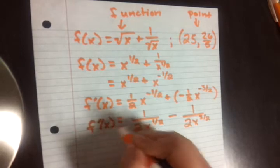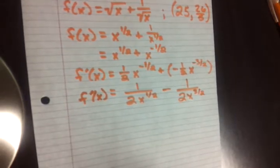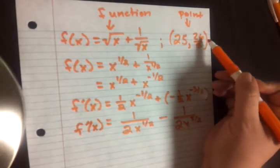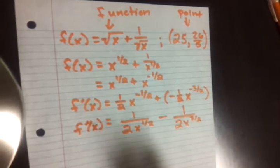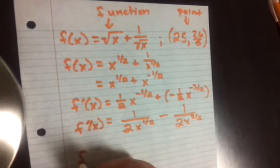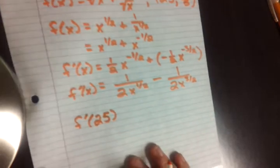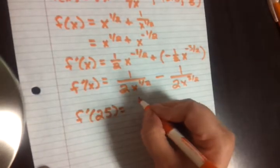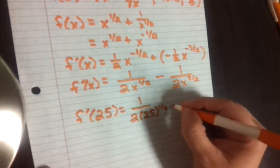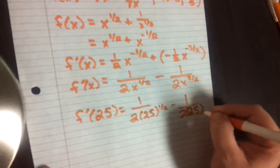So we know the formula. Now we just need to plug in a point to figure out exactly what that slope is going to be at that point. And the point they gave us was (25, 26/5). What can I plug into my derivative? I can plug an x in. The 25 was the x value. So I am going to take f'(25). And that is going to tell me what the slope is at the point 25. So I have 1 over 2 times 25^(1/2) minus 1 over 2 times 25^(3/2).